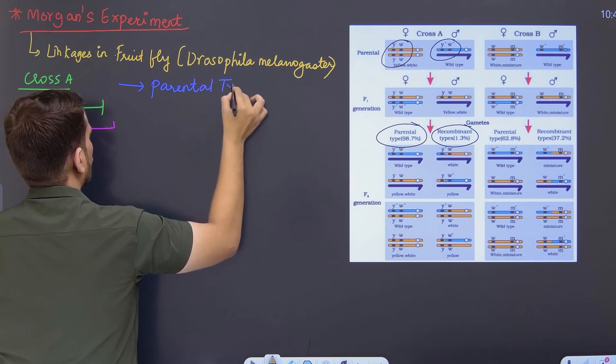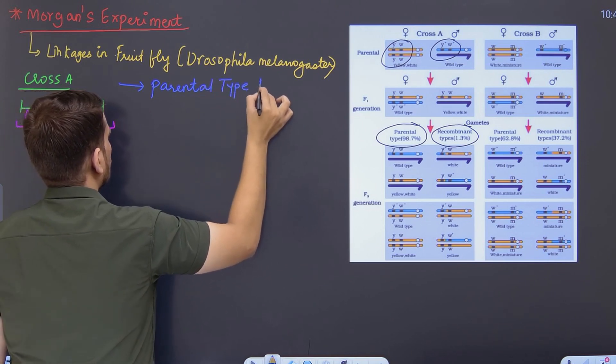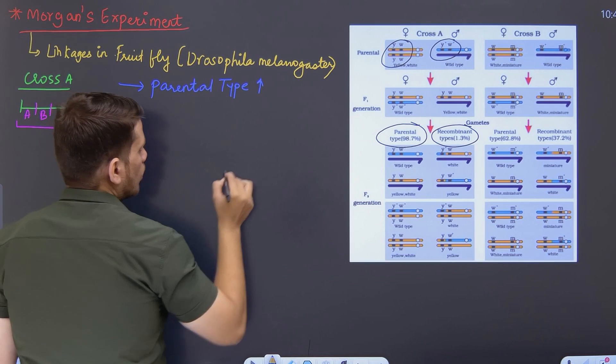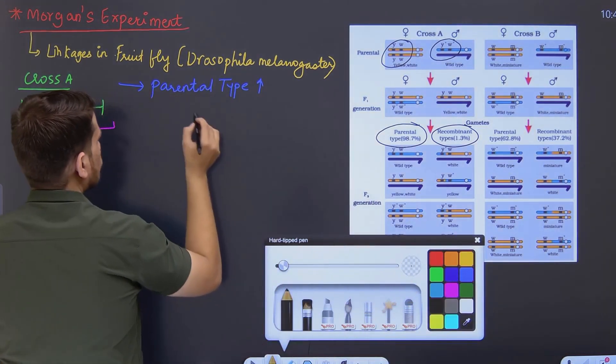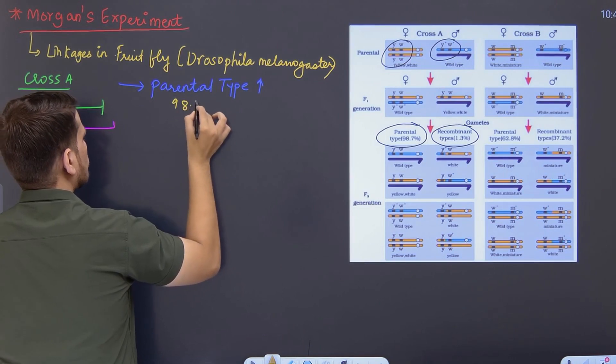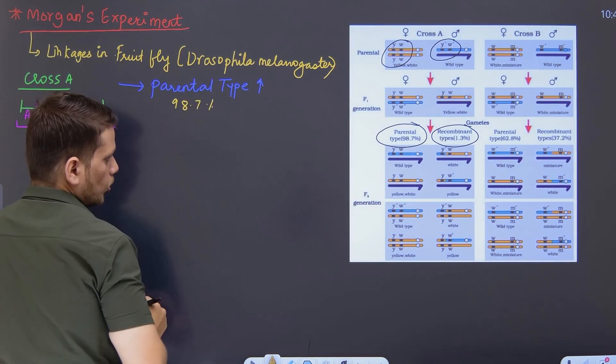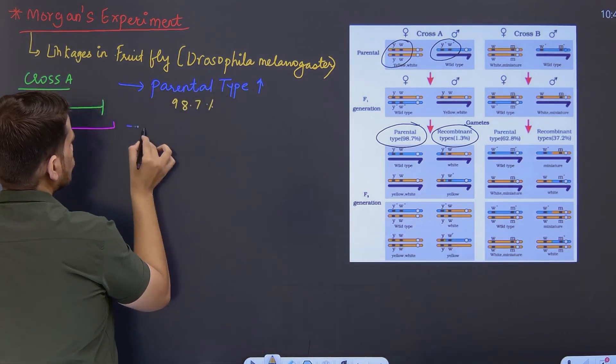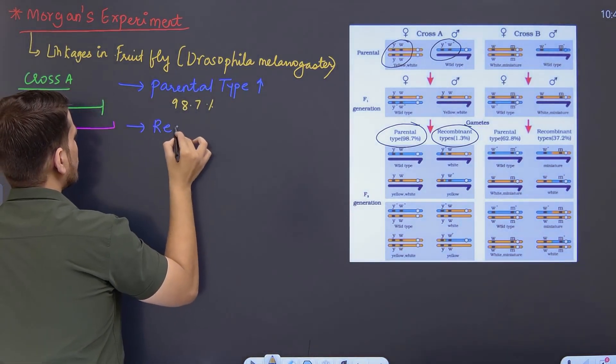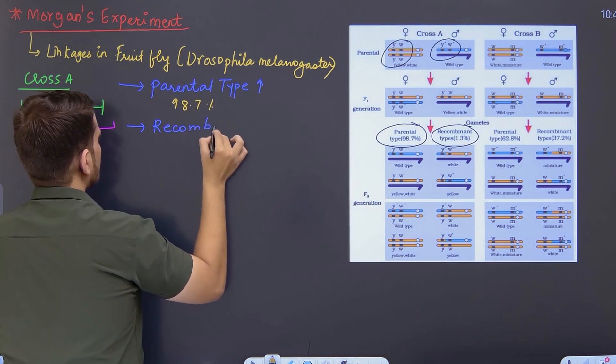And this parental type was found to be in larger proportion, which was near around 98.7%. Okay students. And then we talked about the recombinant types. Recombinant means those that have crossed over.